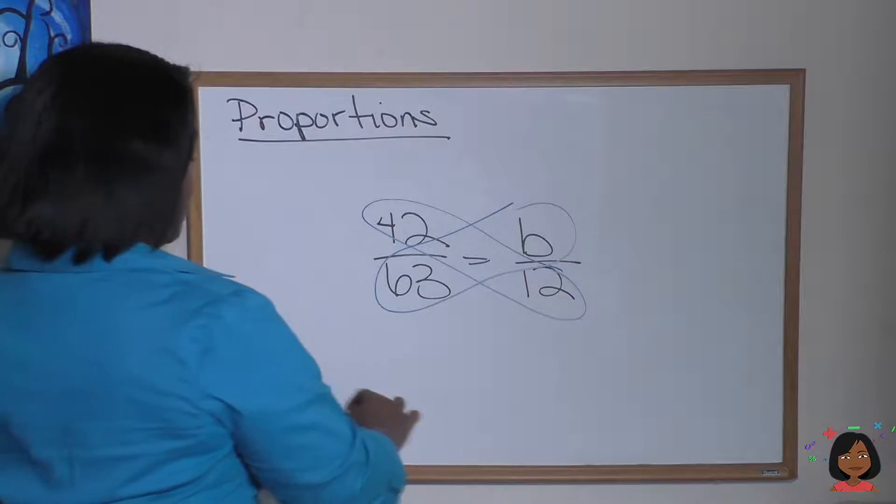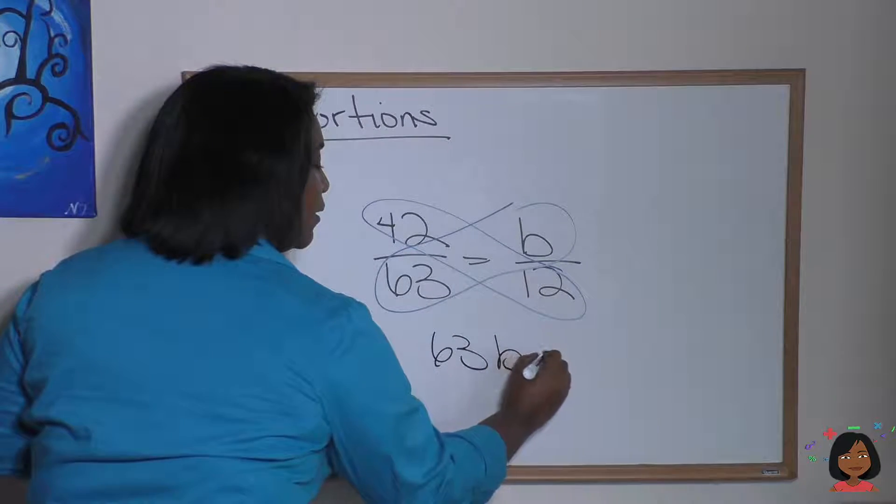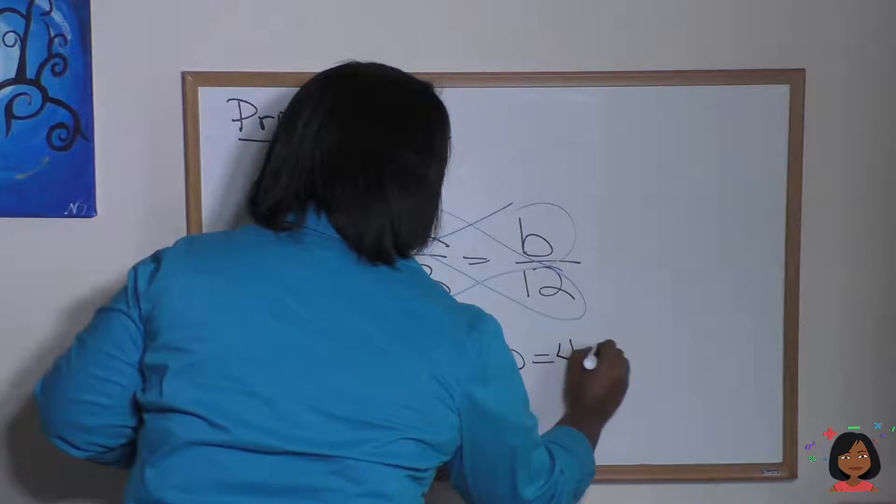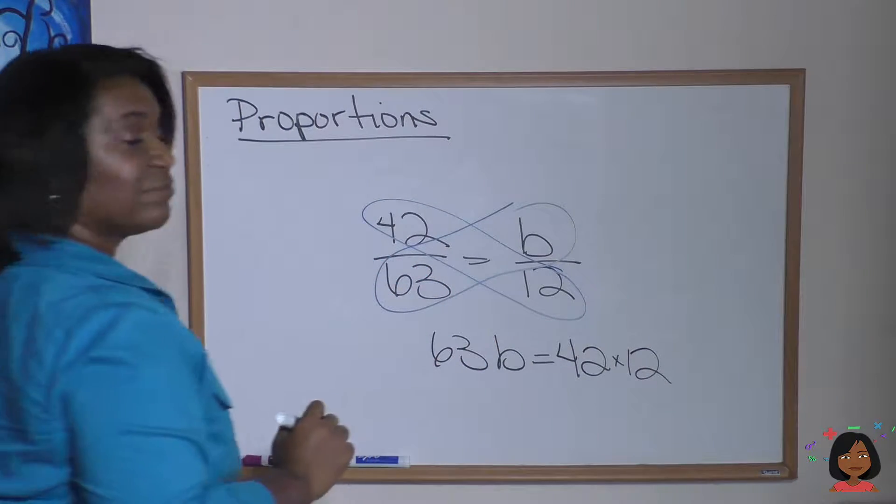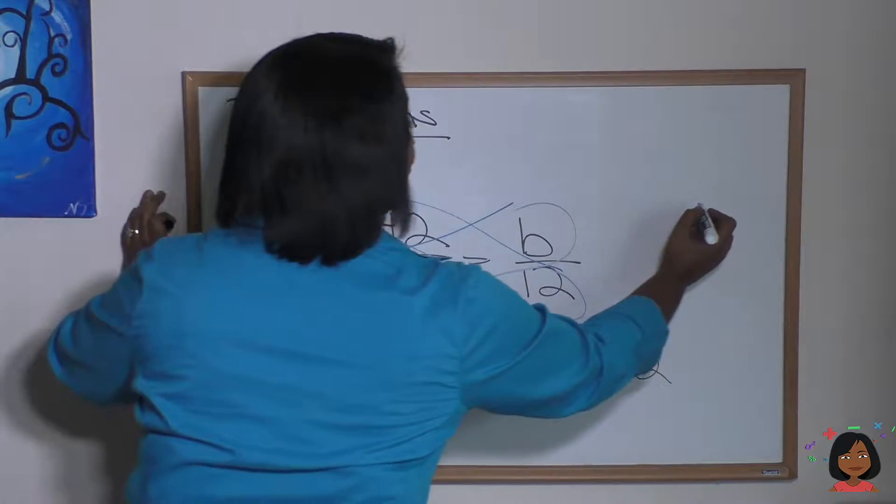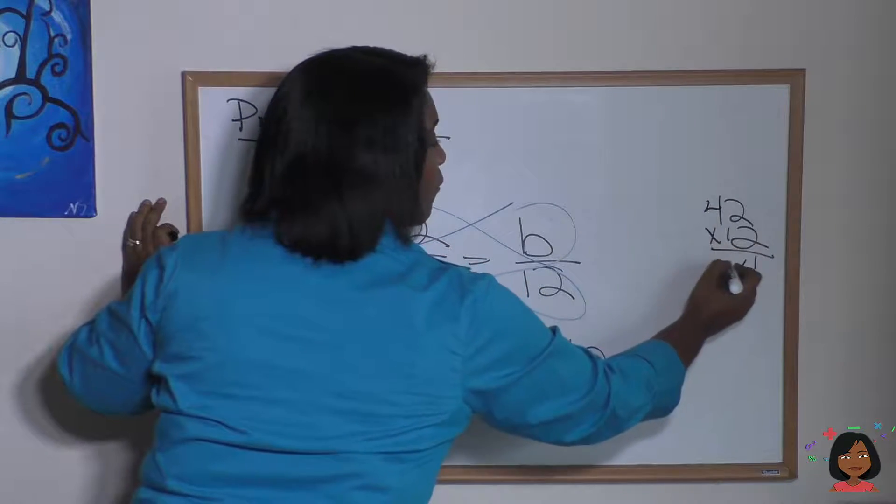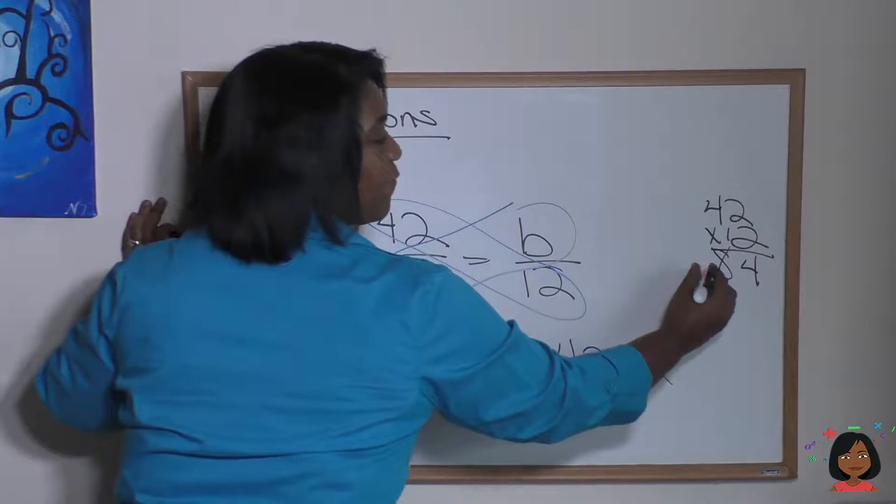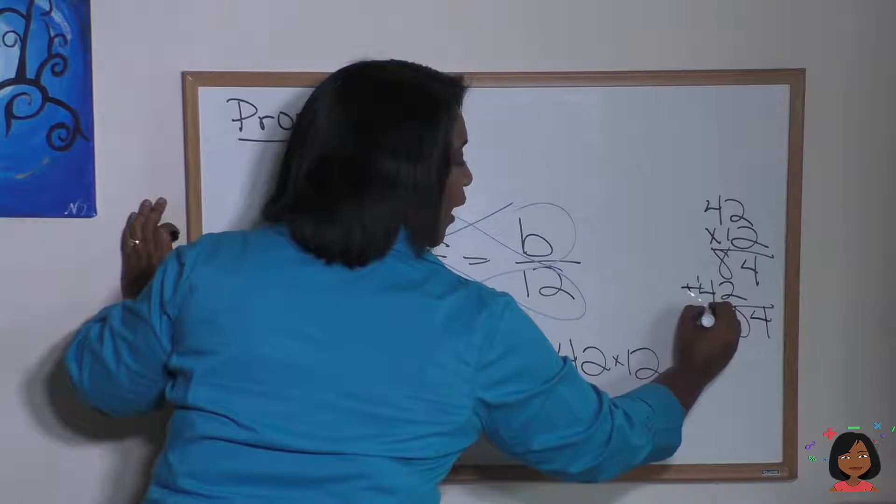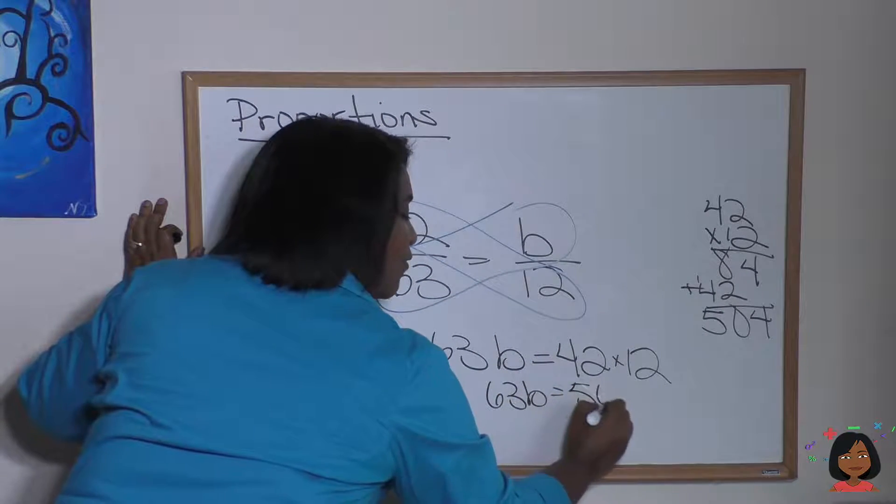Okay, here we go. We're going to start with my 63b, which is the same thing as saying 63 times b equals 42 times 12. I'm going to do 42 times 12 over to the side because I don't know that answer in my head. So here we go. 42 times 12. 2 times 2 is 4. 4 times 2 is 8. And then 42 times 1. Let's add it up. Okay, we get 504.